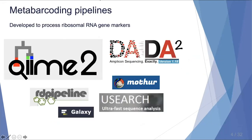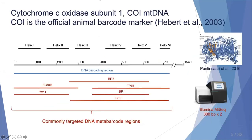There are a number of pipelines currently available for handling amplicon sequencing data, but they were all primarily developed to process ribosomal RNA gene markers. In this project, we're actually working with a protein coding gene called cytochrome oxidase subunit 1, also known as CO1.